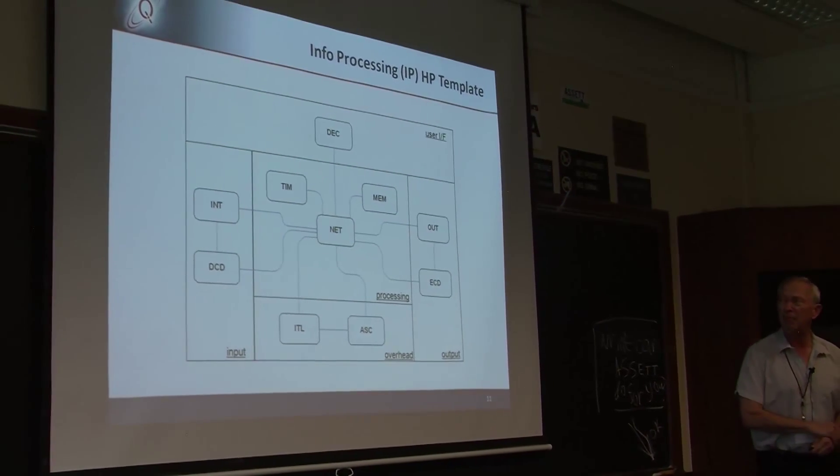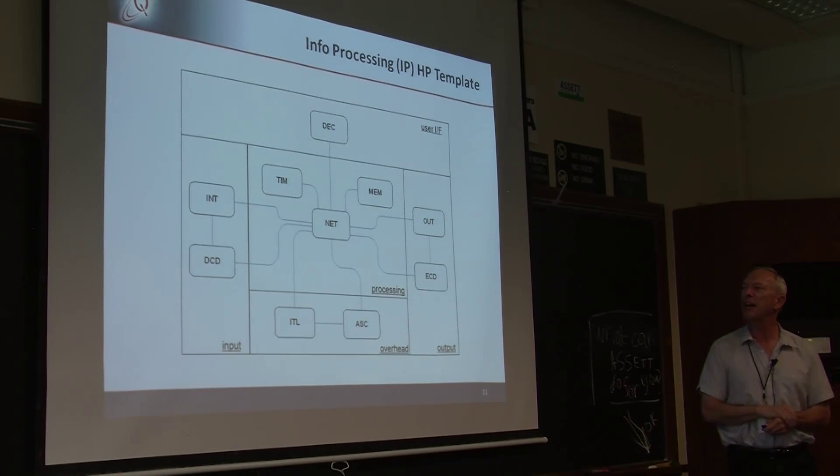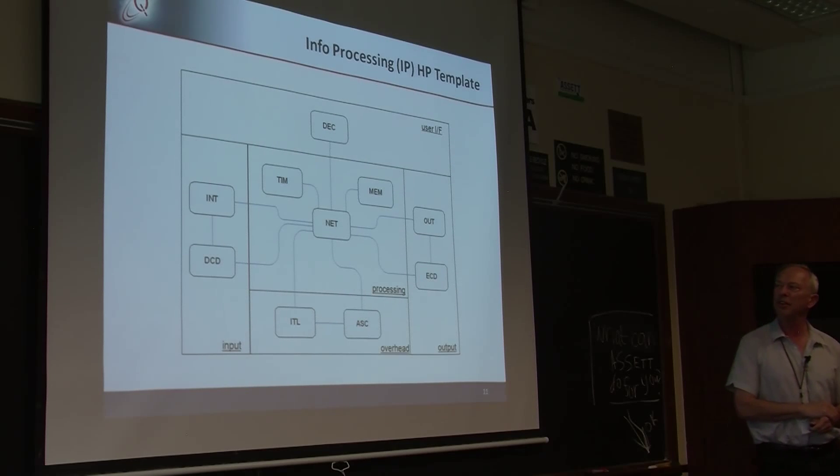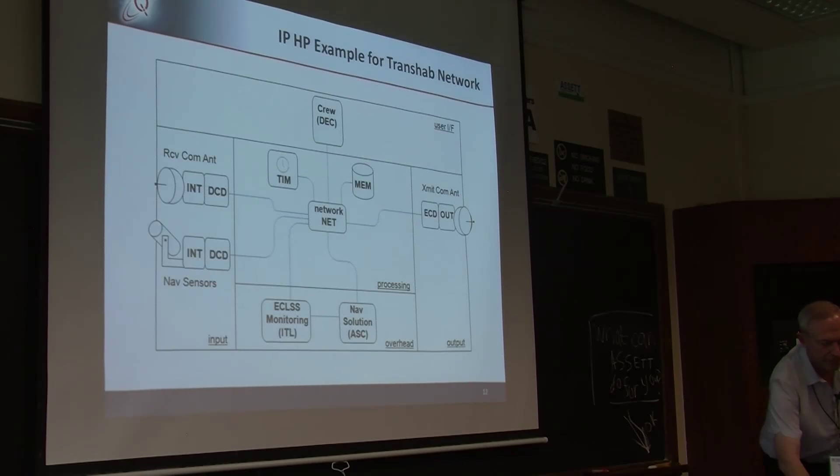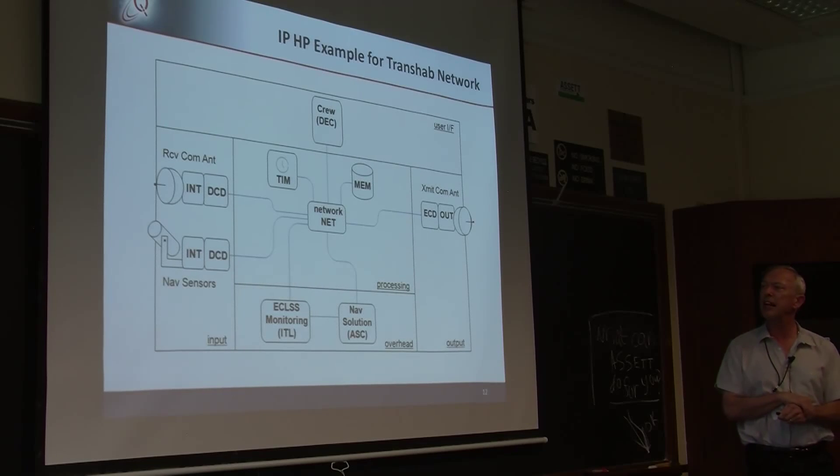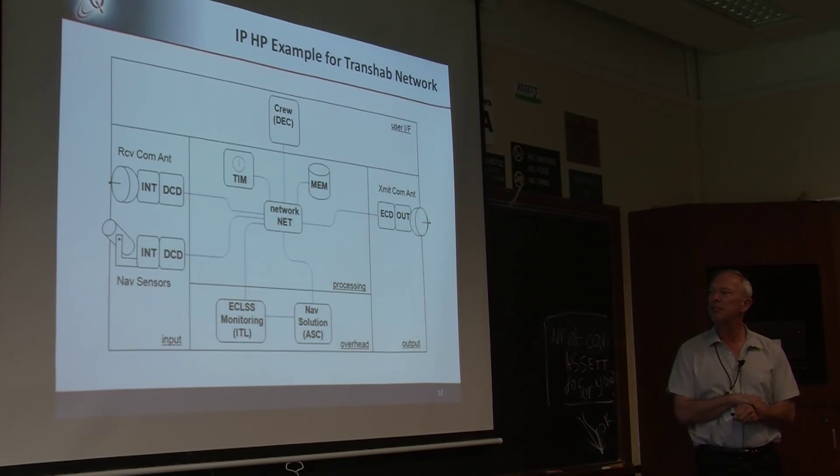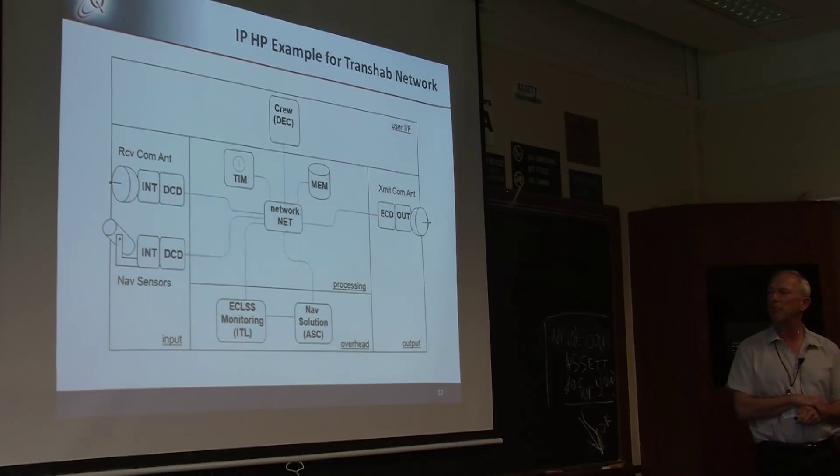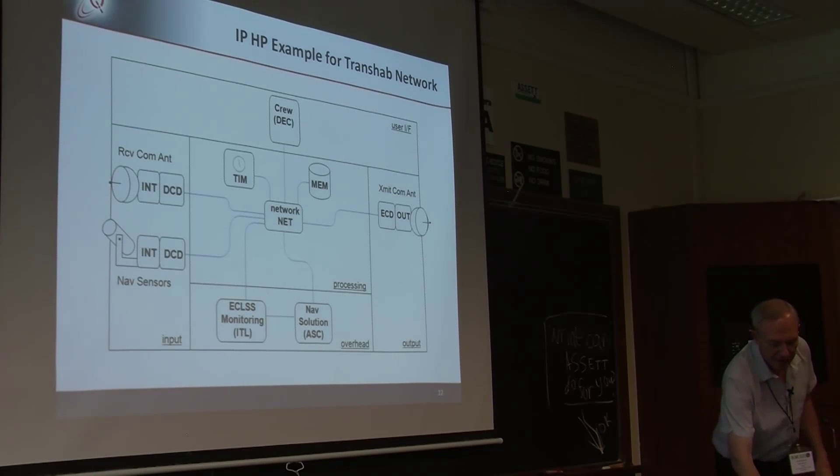This is the information processing template. It looks very much like a standard network template now. What's interesting is he came up with this in 1972, before there were network-based information processing. So I mean, really just by looking at how living systems process information, he was able to predict what's now a very modern network architecture. This is an example of what the network architecture might look like for a transhab context. So, we have receive antennas that are inputting data into the network. We have also nav sensors potentially inputting data. Some of that will go to the nav solution associator. You also have internal monitoring, like for the life support systems, a timer, some memory, and then COM output. So, it fits very well into the context of living systems theory.